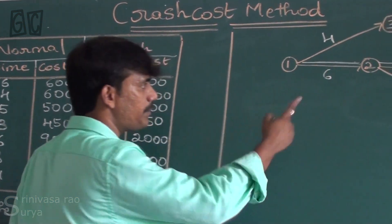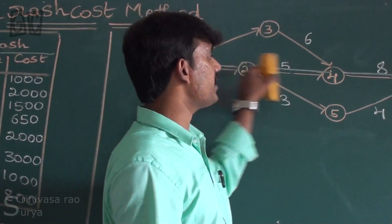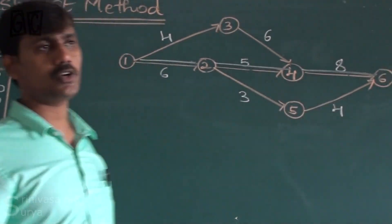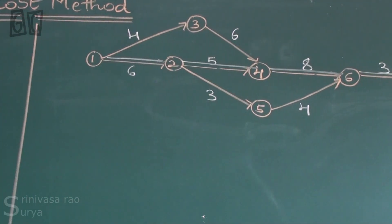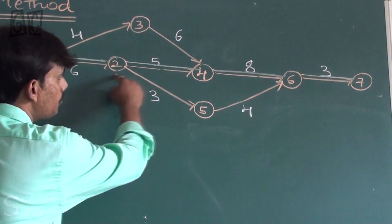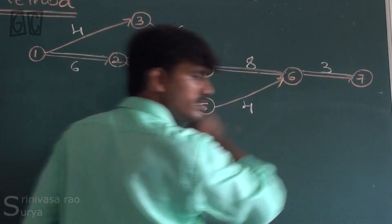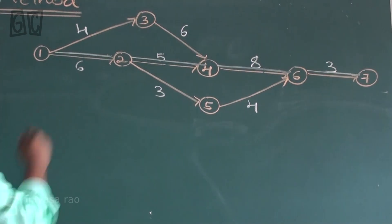The CPM path is as follows: the critical path goes through nodes 1 to 2, 2 to 4, 4 to 6, and 6 to 7.